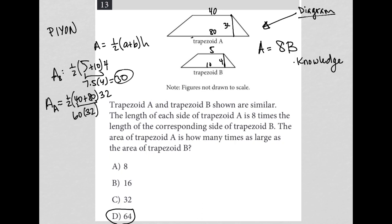40 plus 80 is 120. Half of 120 is 60. So I have to do 60 times 32. This is the non-calculator section, so I have to do the math by hand. So 60 times 32, 2 times 0, 0. 2 times 6 is 12. 3 times 0 is 0. 3 times 6 is 18. Add that together, I get 19, 20.